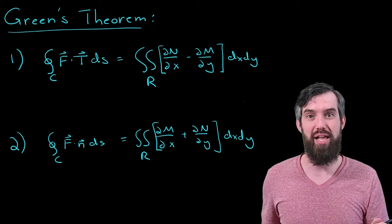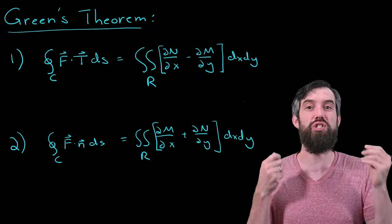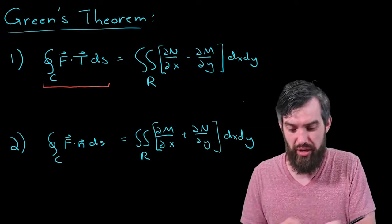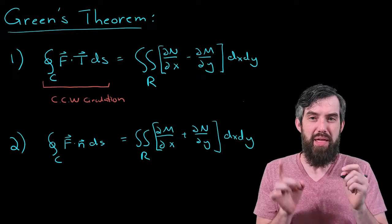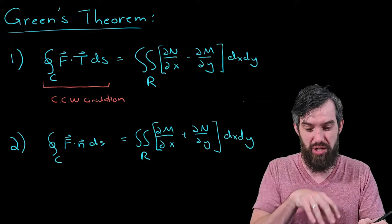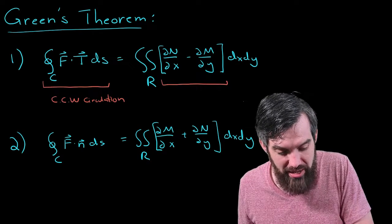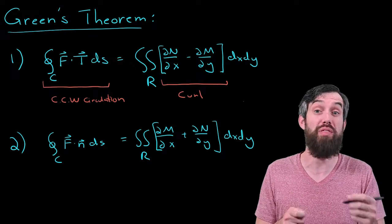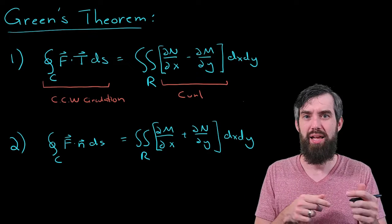So just to remind ourselves about what the theorems are, the first one is talking about the circulation. So the expression here called the counterclockwise circulation. And then this was equal to the double integral over the region enclosed by this curve of an integrand here that we called the curl, or sometimes we would call it the circulation density.